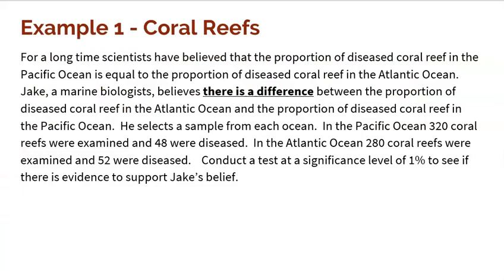The first example deals with coral reefs. For a long time, scientists have believed that the proportion of diseased coral reef in the Pacific Ocean is equal to the proportion of diseased coral reef in the Atlantic Ocean. Jake, a marine biologist, believes that there is a difference between the two. He selects a sample from each ocean. In the Pacific Ocean, 320 coral reef were examined and 48 were diseased. In the Atlantic Ocean, 280 coral reef were examined and 52 were diseased. We need to conduct a test at the 1% significance level to see if there is evidence to support Jake's belief.